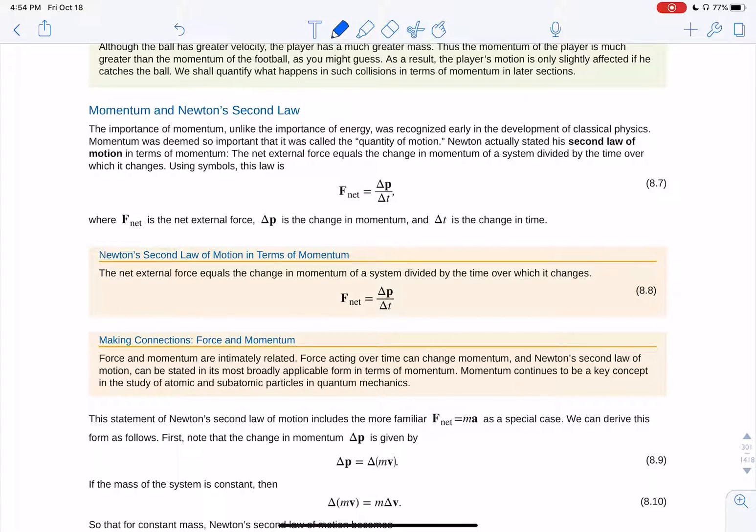Another way to write Newton's second law, F equals MA, is you can write that F is equal to M change in velocity divided by change in time. And so M times change in V is P over change in time. You've got MV times, that gives you P, and then divided by T gives you your F net.